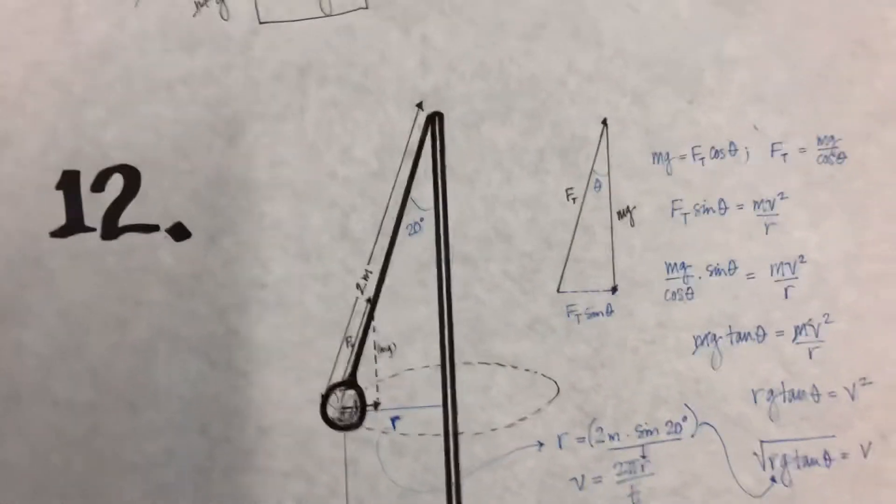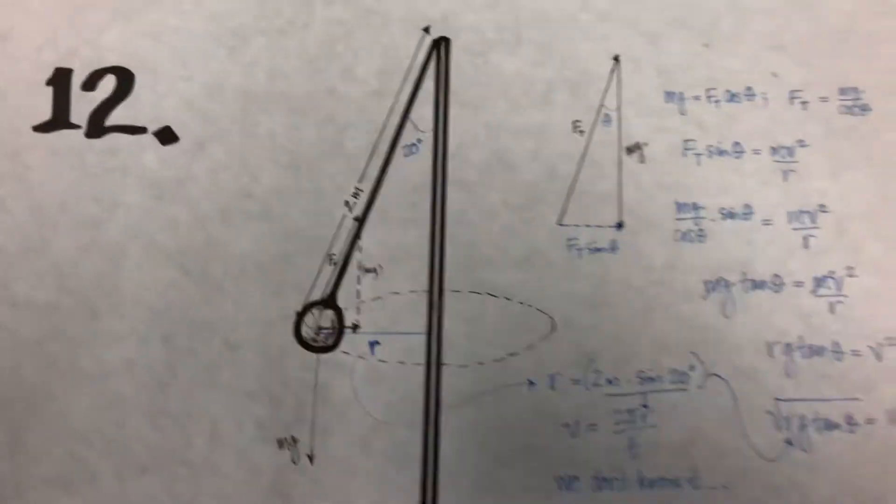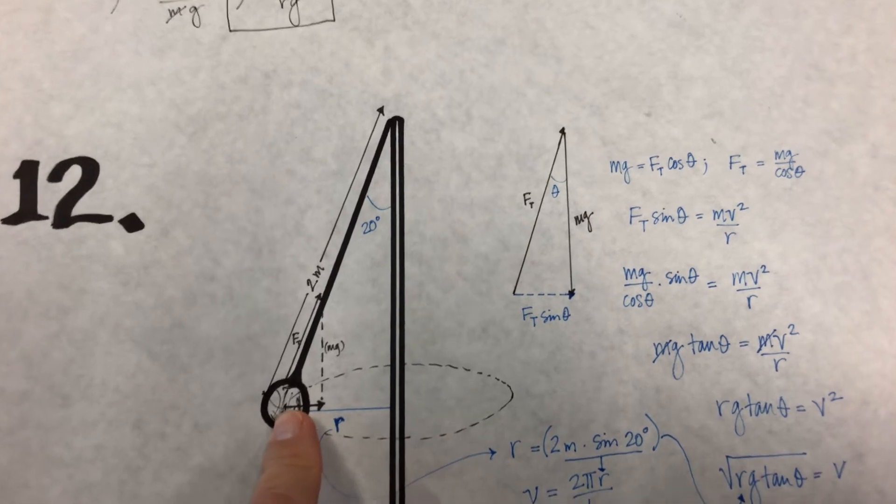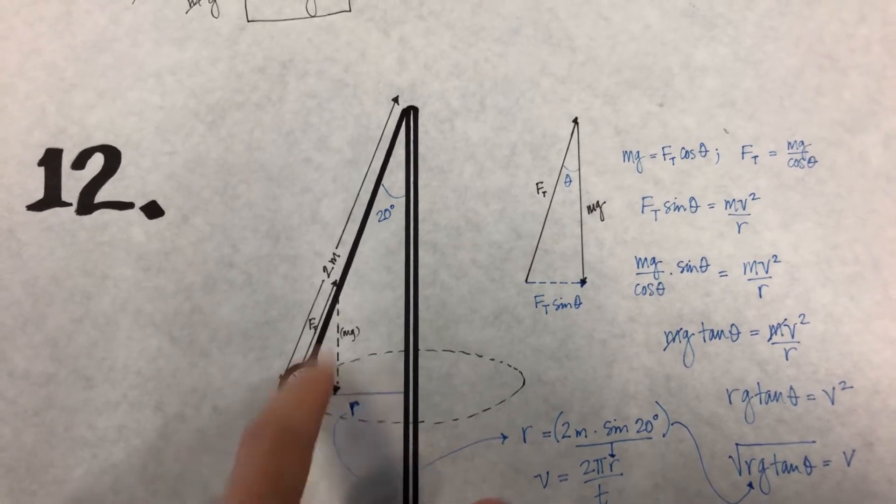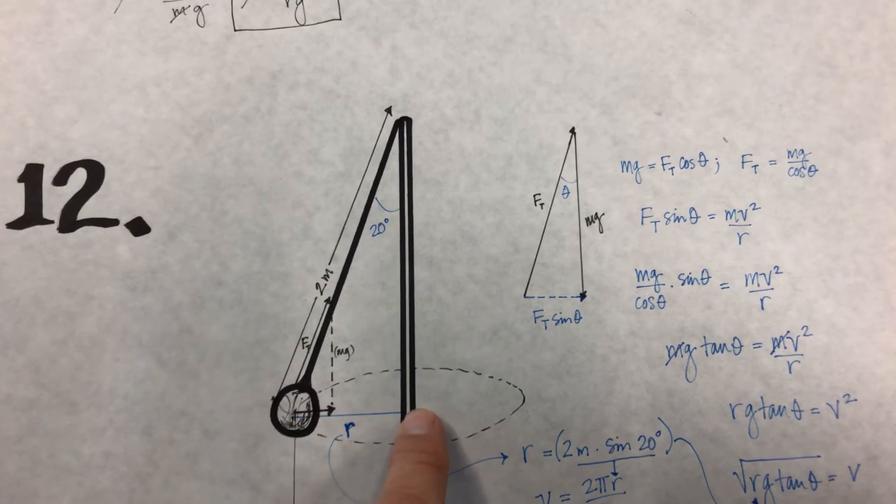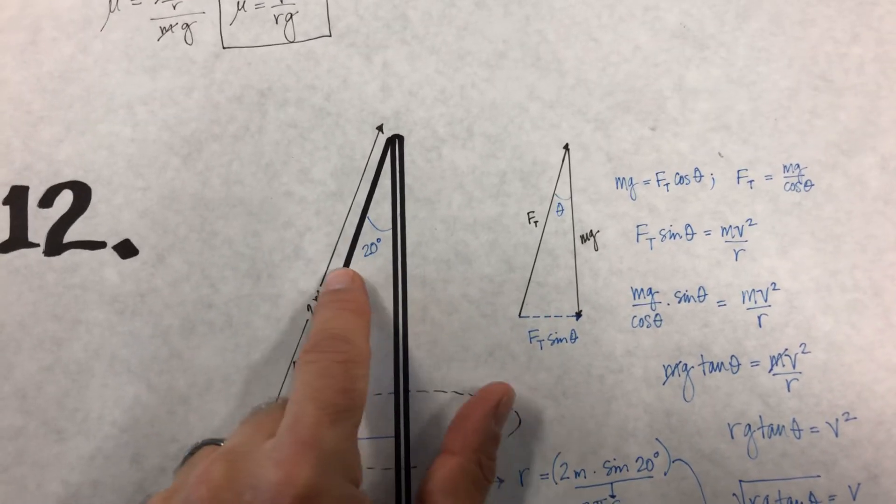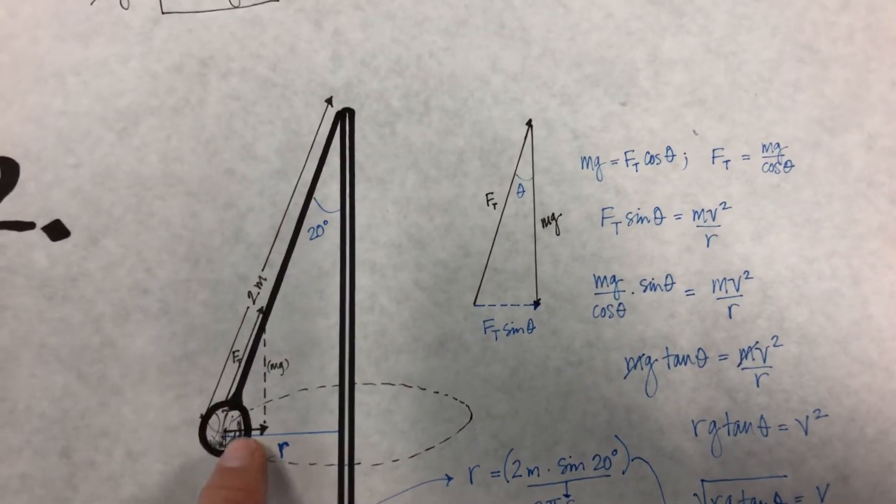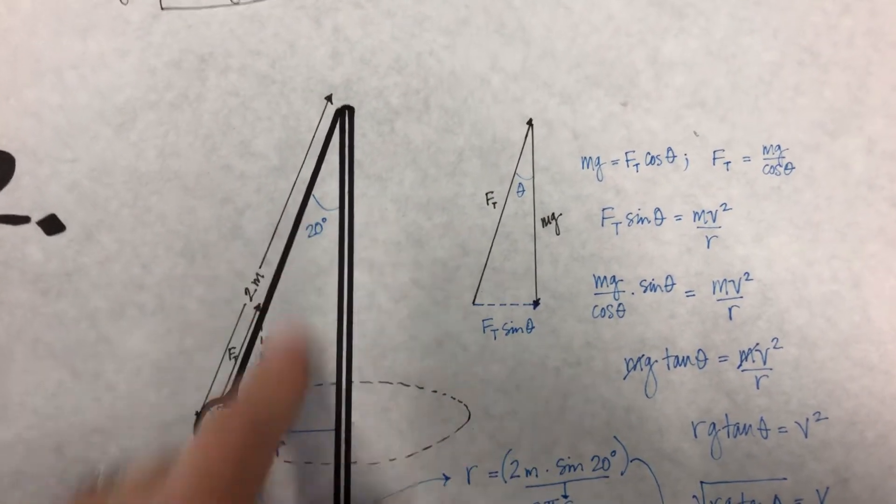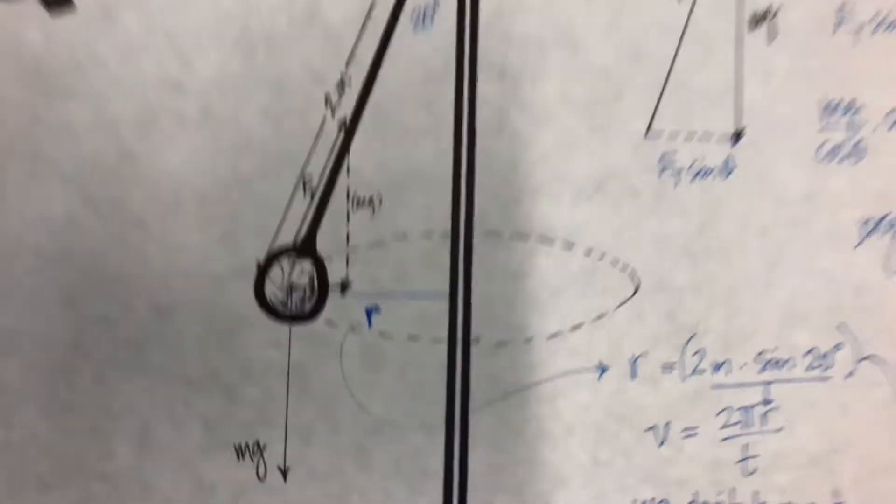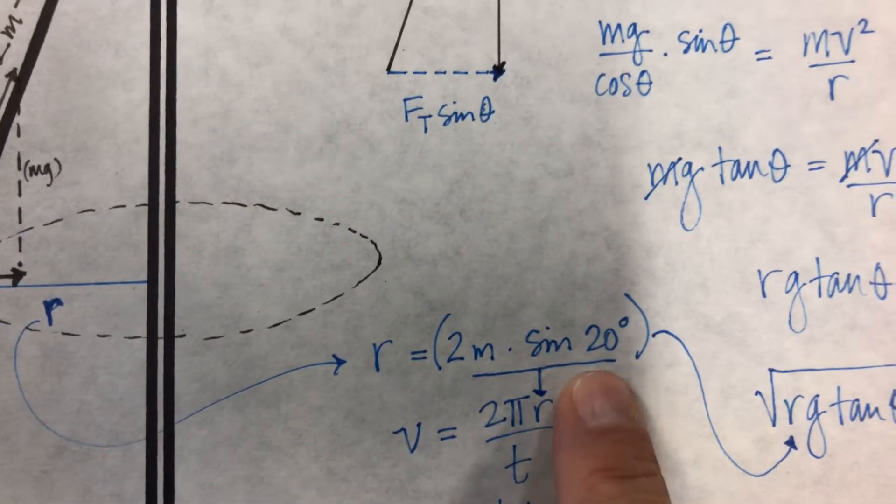So a couple things we need to figure out. One, what is this radius? Well, this radius can be found by using the triangle formed by the 2-meter long rope and the pole and the actual angle of 20 degrees. So we can say the radius is 2 meters times sine of 20. And we'll get that. Once we have that, then we can calculate 2 meters times sine of 20.